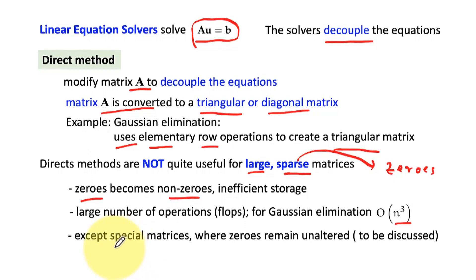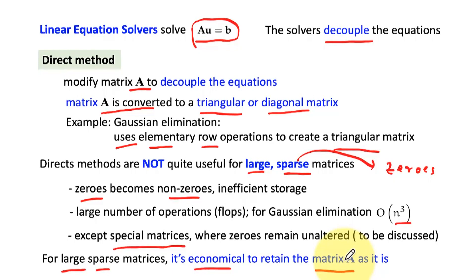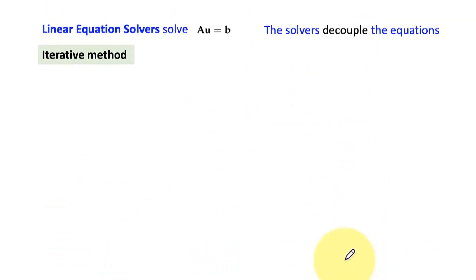In some cases, of course, we use special matrices, and on special matrices the zeros we maintain. We don't change zeros, and we will see some of these methods later on. So in some of these matrices, Gaussian elimination may still be used, but in general, Gaussian elimination will create non-zeros out of zeros and it will make our computation inefficient. So for large and sparse matrices, most of the time it is economical to retain the type of matrix A because we want to keep the matrix sparse. We don't want to make the zeros to be non-zeros. And these are the cases where iterative methods are useful, because iterative methods do not modify A or vector b.